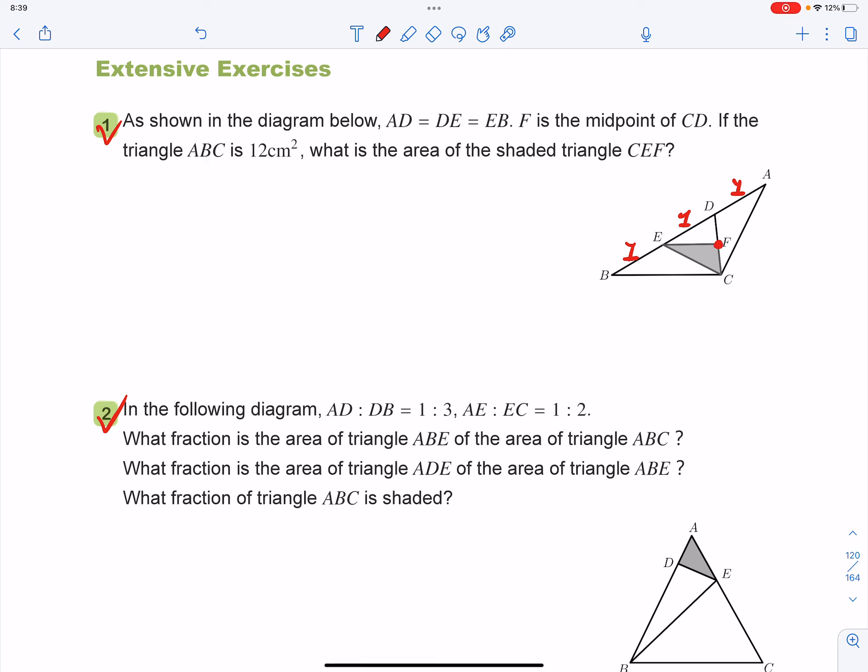So that means DF equals to CF. If the triangle ABC is 12 square centimeters, what is the area of the shaded CEF?